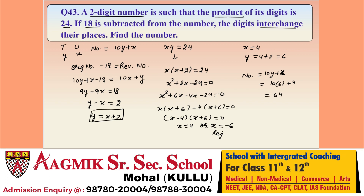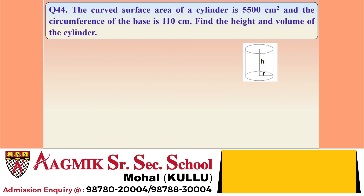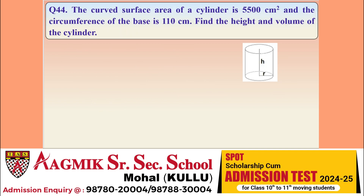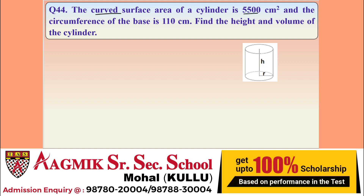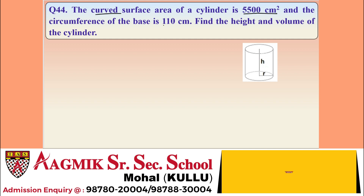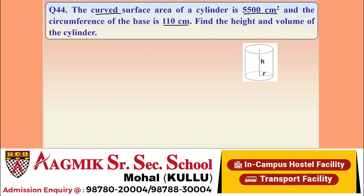Question 44: the curved surface area of a cylinder is 5500 cm² and the circumference of the base is 110 cm. Find the height and volume of the cylinder.